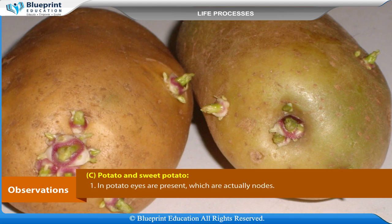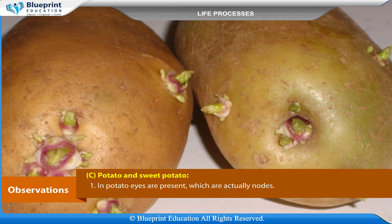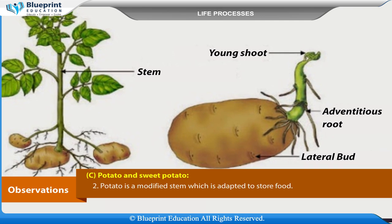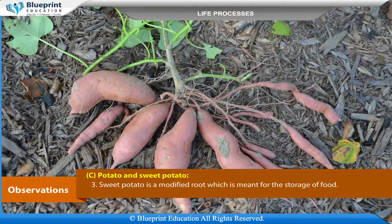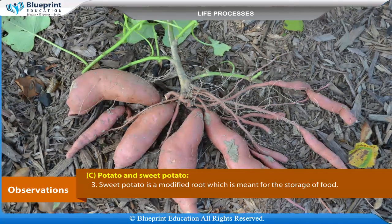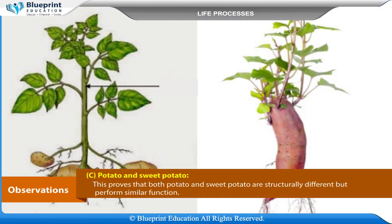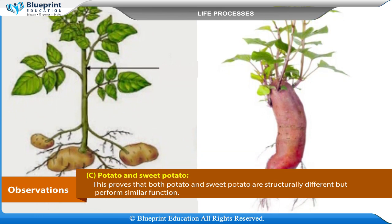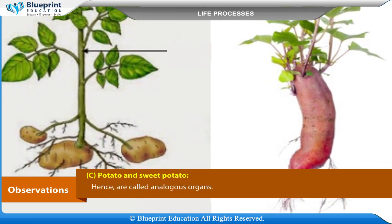Observation C: Potato and sweet potato. Potato has eyes which are actually nodes; it is a modified stem adapted to store food. Sweet potato is a modified root meant for storage of food. Both potato and sweet potato are structurally different but perform a similar function, hence they are called analogous organs.